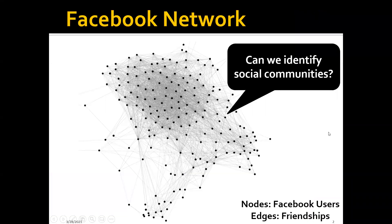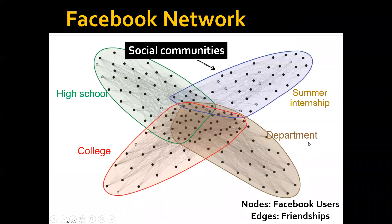For example, this is a Facebook network where each node is a Facebook user and each edge represents a friendship between the users. The question we ask is: can we identify social communities? If you take a closer look, you can actually see that there are some structures in this network. For example, these people are all from the same high school, while these students are doing the summer internship in the same company, and these students finished their degree in the same college, and these are from the same department as graduate students. So ideally, we want the algorithm to be able to detect such communities.